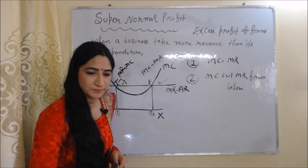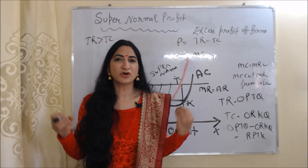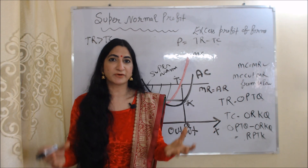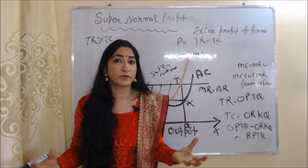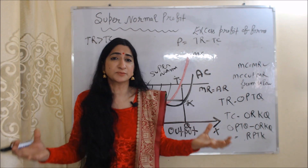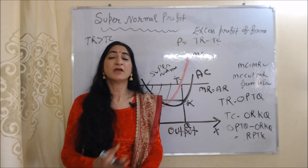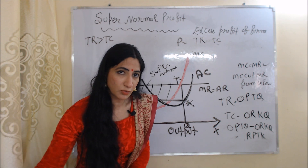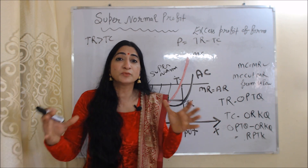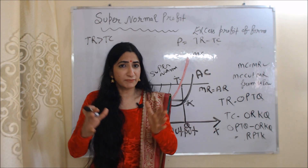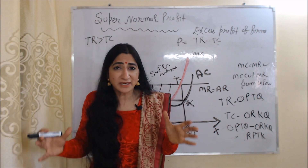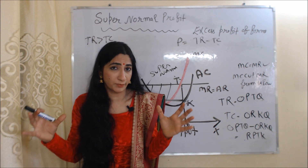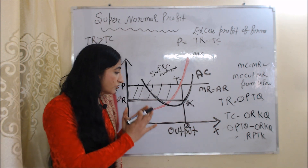Now we are going to talk about super normal profit. Super normal profit is the excess profit of a firm — when the firm's total revenue is more than its total cost, the firm gets super normal profit. In other words, when the firm's income is more than its cost, it earns super normal profit.